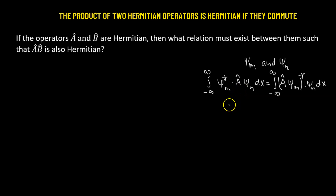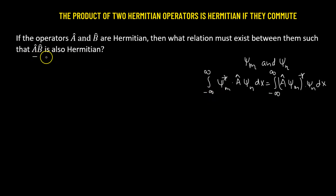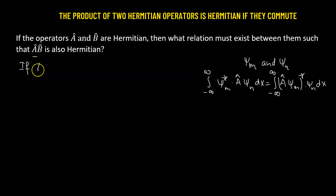The same holds for the operator B. Now we will use this definition because it is stated that the product of the two operators AB is also Hermitian, so that means if the product of the two operators AB is Hermitian,